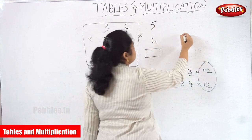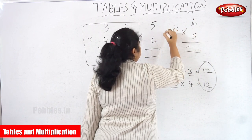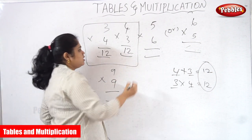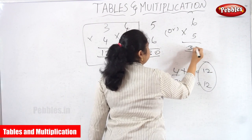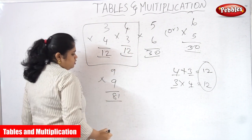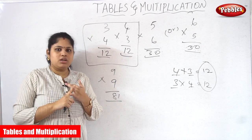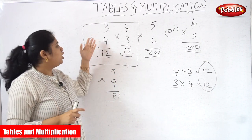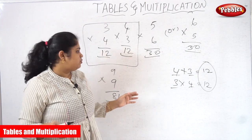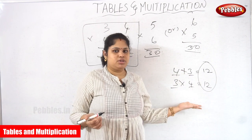Similarly, 5 into 6 or 6 into 5 — both give 30. And 9 into 9 is 81. The second key point is: 3 into 4 and 4 into 3 give the same answer. We should concentrate on the combination of numbers, not which appears first or second.